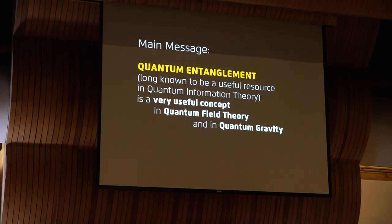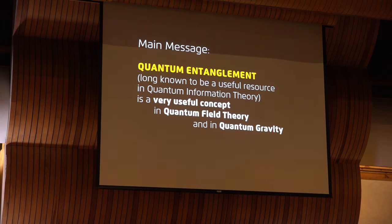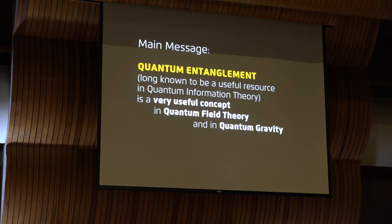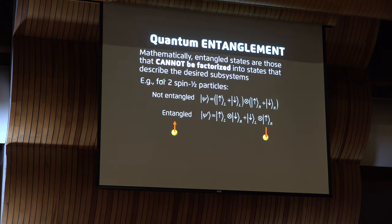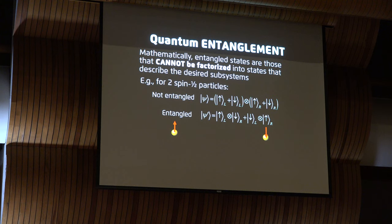We all know that quantum entanglement has long been known to be a useful resource for quantum information. But the main message I want to get across today is that in recent decades it's also been found to be a very useful concept directly in quantum field theory and also in quantum gravity. Entanglement refers to states that cannot be factorized into subsystems. A typical example involves two spin-1/2 particles. A product state is not entangled because you can assign each particle a definite state, whereas a state that is not factorizable is entangled — the state of each subsystem is shared among them.